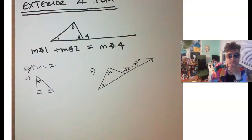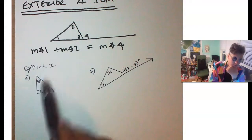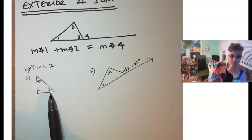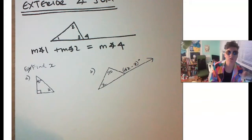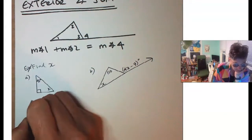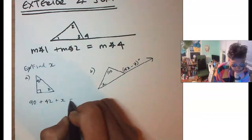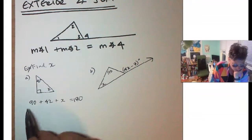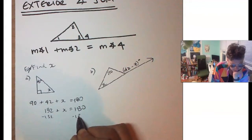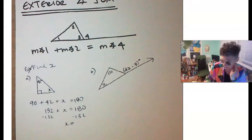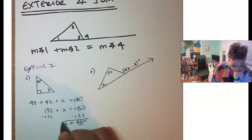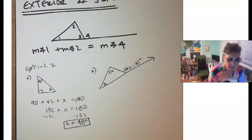Let's do a couple of examples. Example A: we have a right triangle with a 42-degree angle, and we need to find x. Using the Triangle Sum Theorem, all angles add to 180 degrees. So 90 plus 42 plus x equals 180. That gives us 132 plus x equals 180, and subtracting 132 from both sides gives x equals 48 degrees. Easy peasy lemon squeezy.